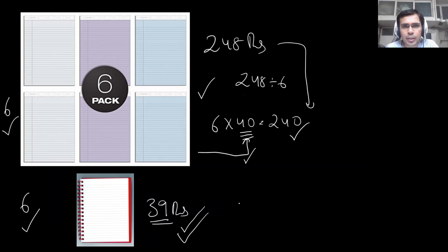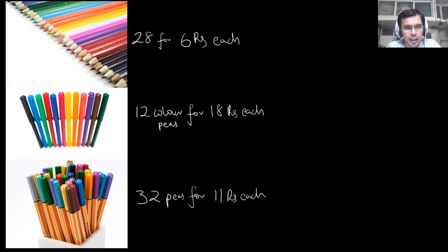Another example would be you shopped and now the shopkeeper is handing over the bill to you. And you know that you bought 28 of these color pencils for 6 rupees each, 12 of these color pens for 18 rupees, and 32 of these pens for 11 rupees. Now the shopkeeper is going to hand over the bill to you.